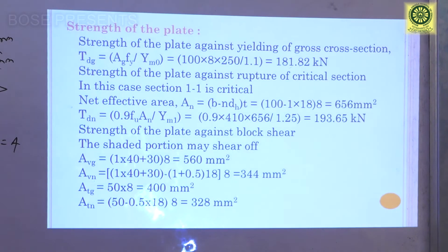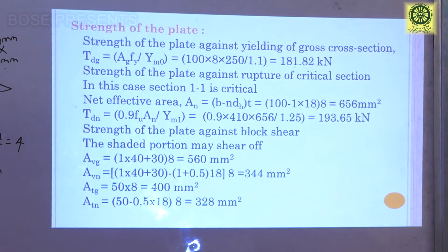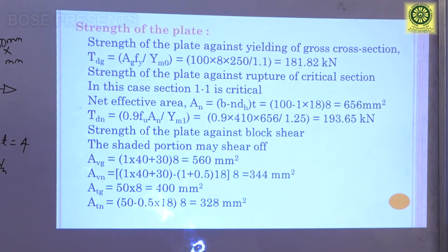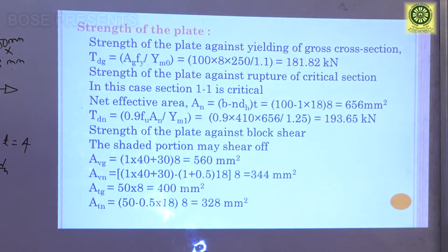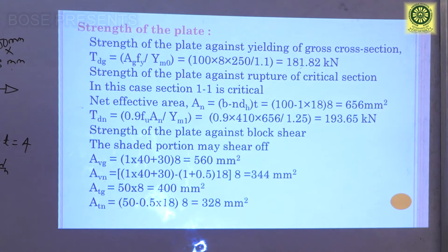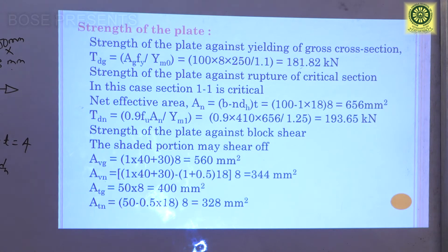Now calculate TDN using the formula TDN = 0.9 × AN × FU / γM1. Here FU = 410 MPa for FE 410 grade plate, AN = 656 mm², and γM1 = 1.25 from Table 5. Therefore TDN = (0.9 × 656 × 410) / 1.25 = 193.65 kN.